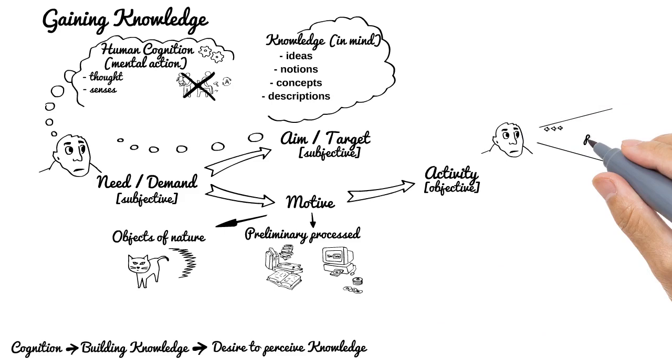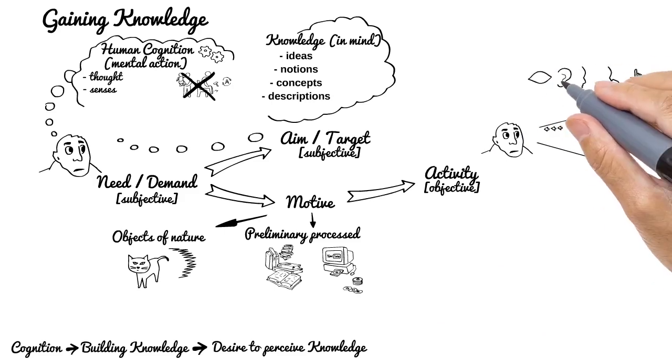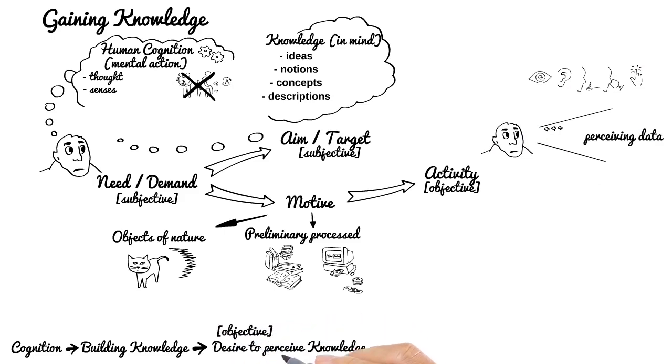Perceiving raw data via senses, listening someone's speech, reading books, watching videos. Remember, generally motives are objective and could be observed by anyone. For cognition and knowledge analogical diagram, there is one exceptional thing.